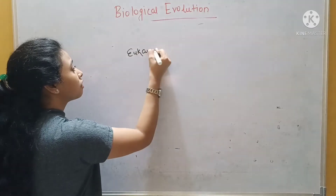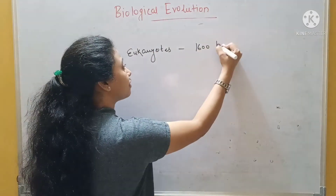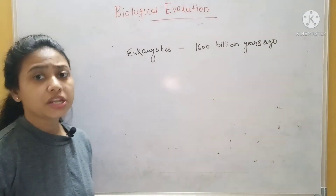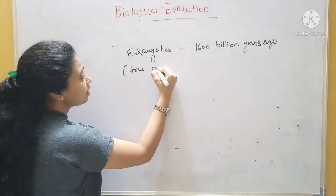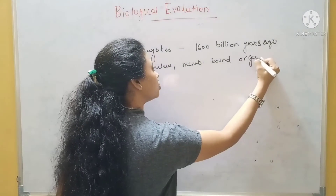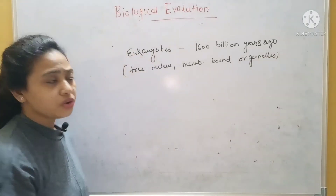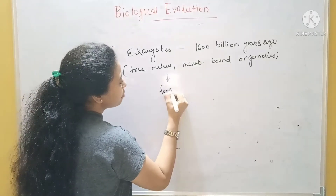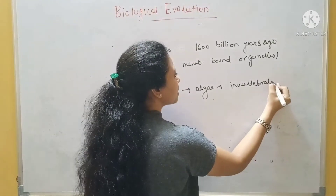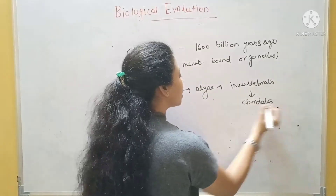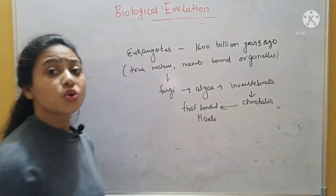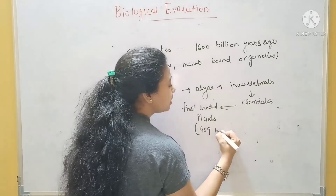So then eukaryotes evolved around 1,600 million years ago. Eukaryotes had a true nucleus and membrane-bound organelles. With further complexity, they started making fungi, then algae, some invertebrates, then chordates, and ultimately landed plants evolved about 459 million years ago.